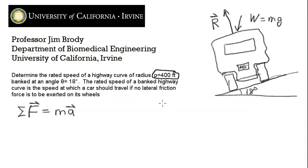Well, what do we have? We have a car essentially traveling in the equivalent of a circle at a constant speed. And that's going to be the rated speed. So if it's traveling at a constant speed in a circle, is there any acceleration?